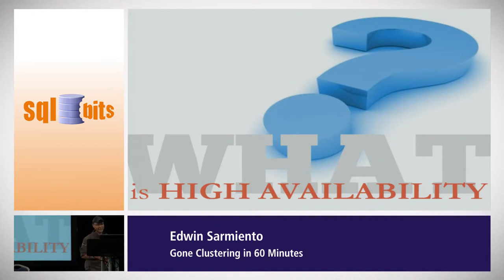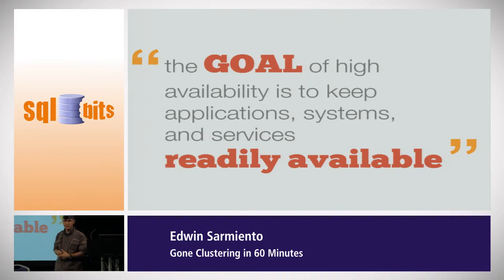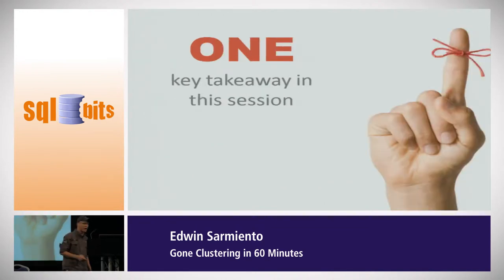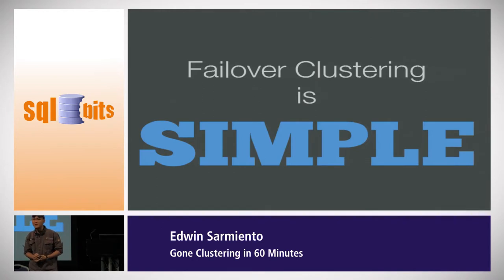Let's start by defining what high availability is. The goal of high availability is to keep systems, applications, and services readily available. I like going to the dictionary and finding the definition of something, because by understanding the definition it answers a lot of questions about how complex things are. If there's one takeaway from this session, it's that failover clustering is simple — something as complex as failover clustering can be as simple as understanding the basics.